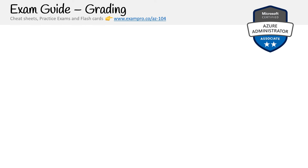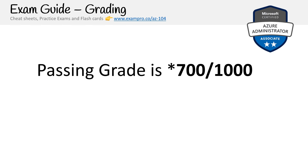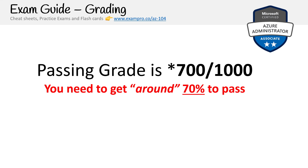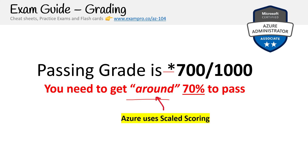The passing grade is 700 out of 1000 points, which is 70%. I put an asterisk here to emphasize that you need to be around that score — it's totally possible to fail with a 70% due to scaled scoring. I always recommend targeting at least 75. When you're studying, aim to get 85% on your practice exams, so that on the real exam you have a buffer of about 10%.